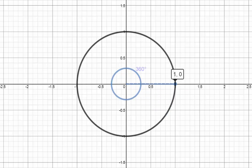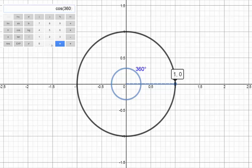If we keep going up to 360 degrees, we are back to the start at 1,0. So cos 360 is 1 and sin 360 is 0.